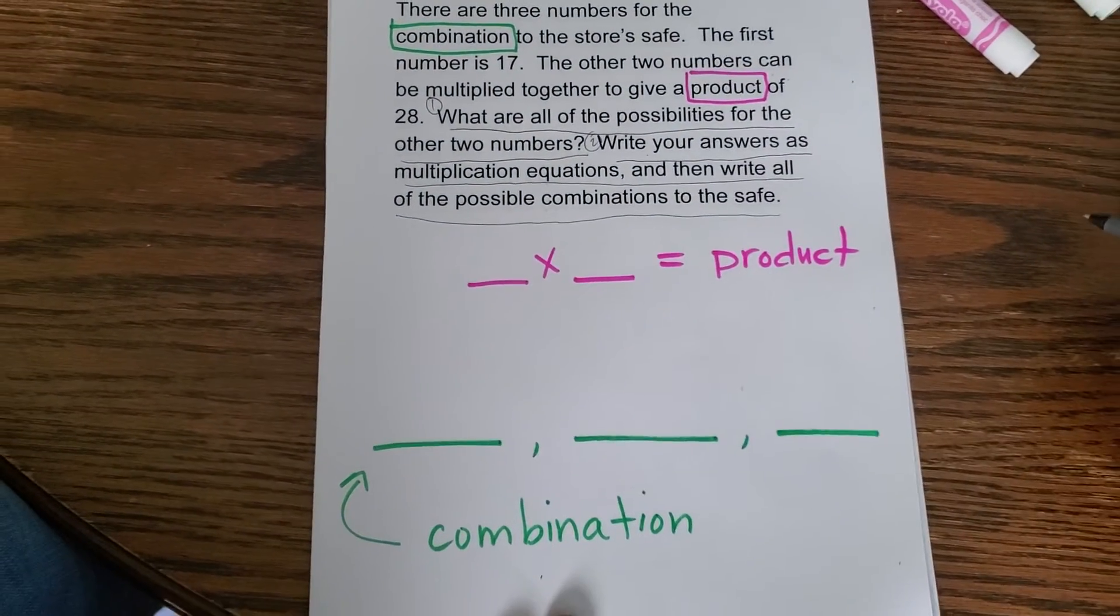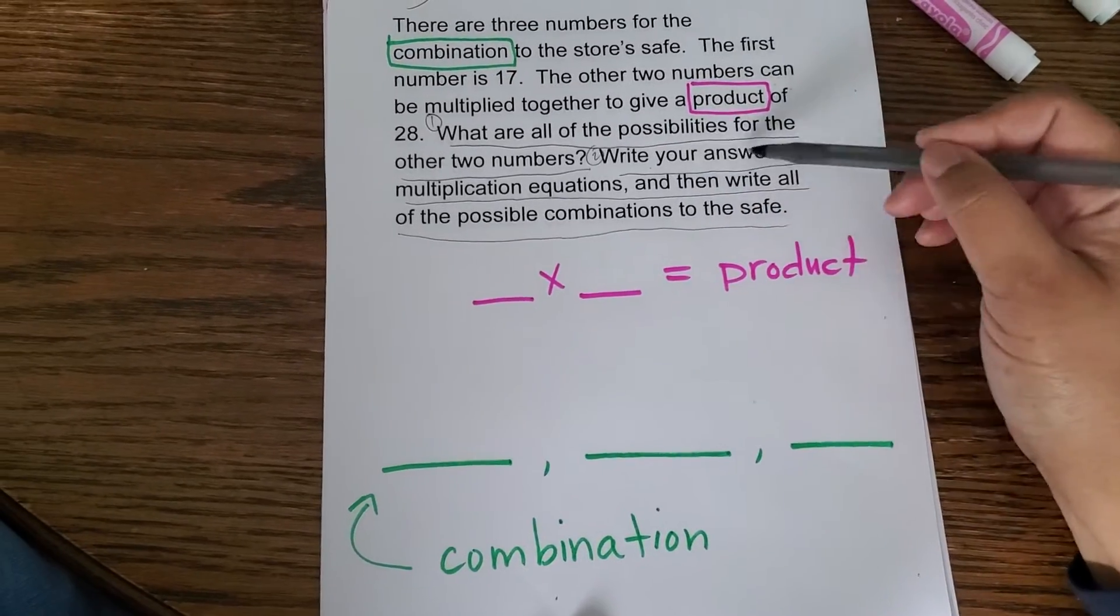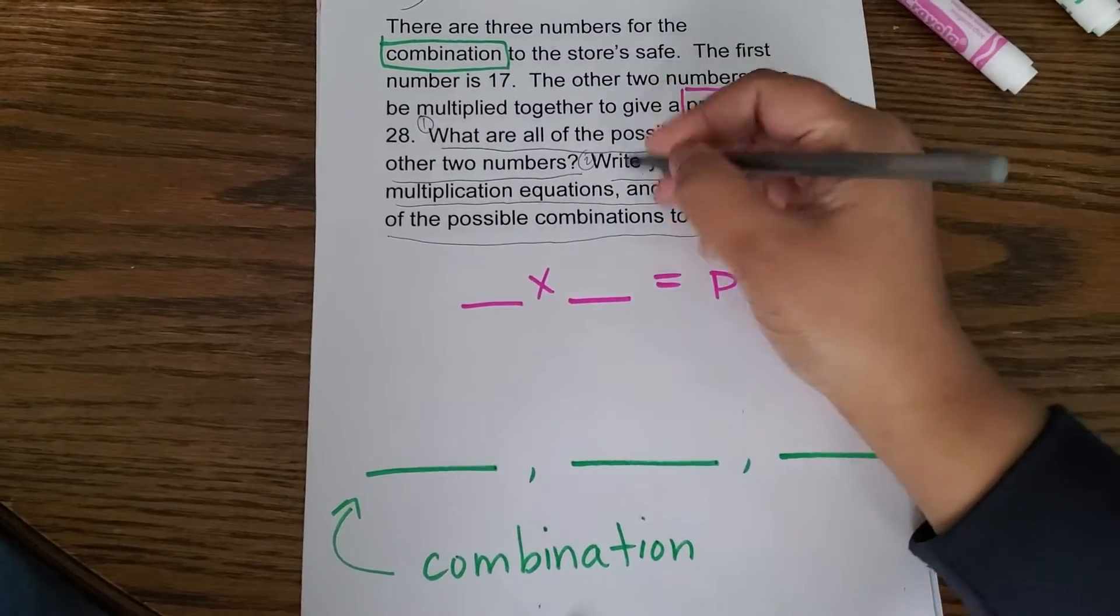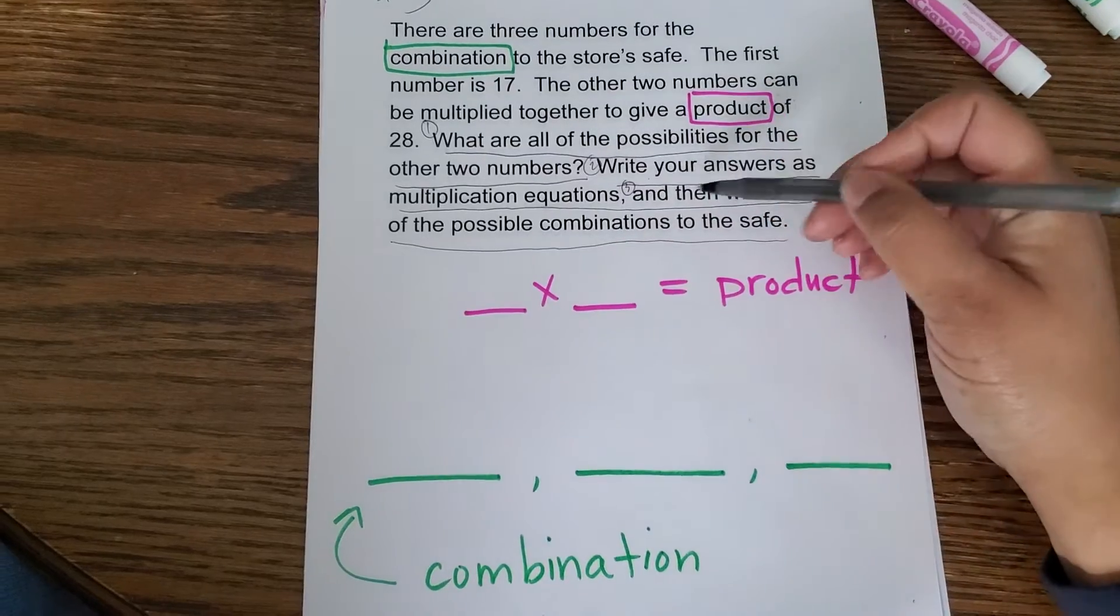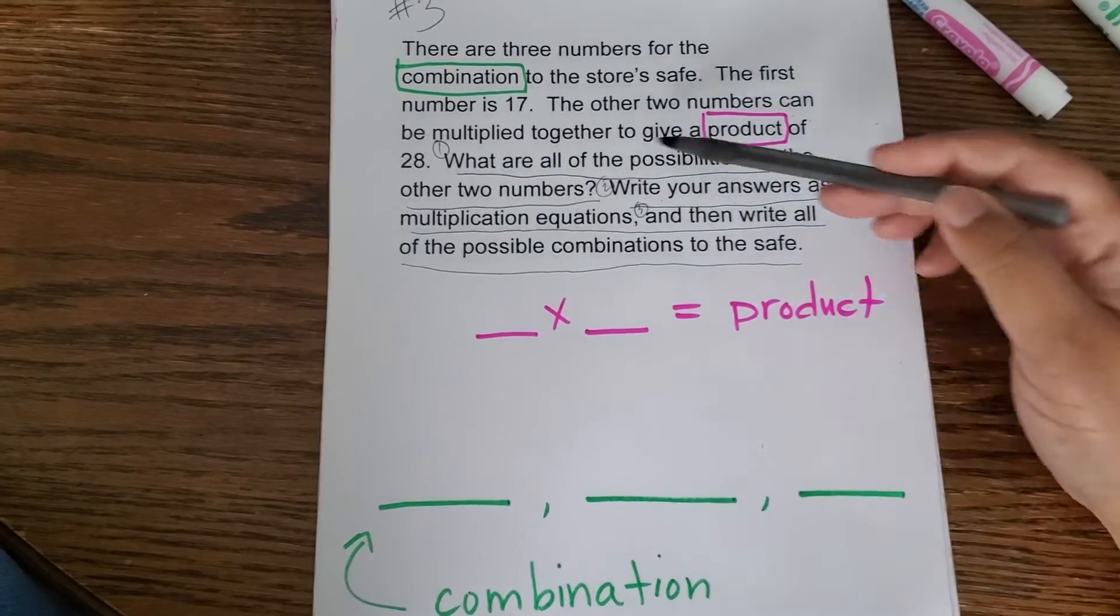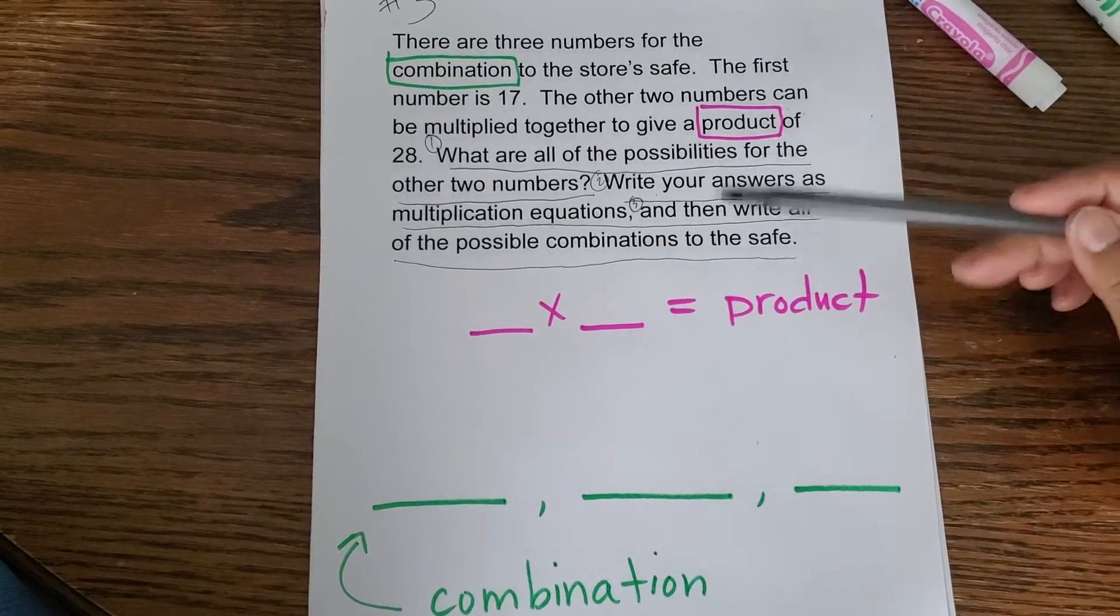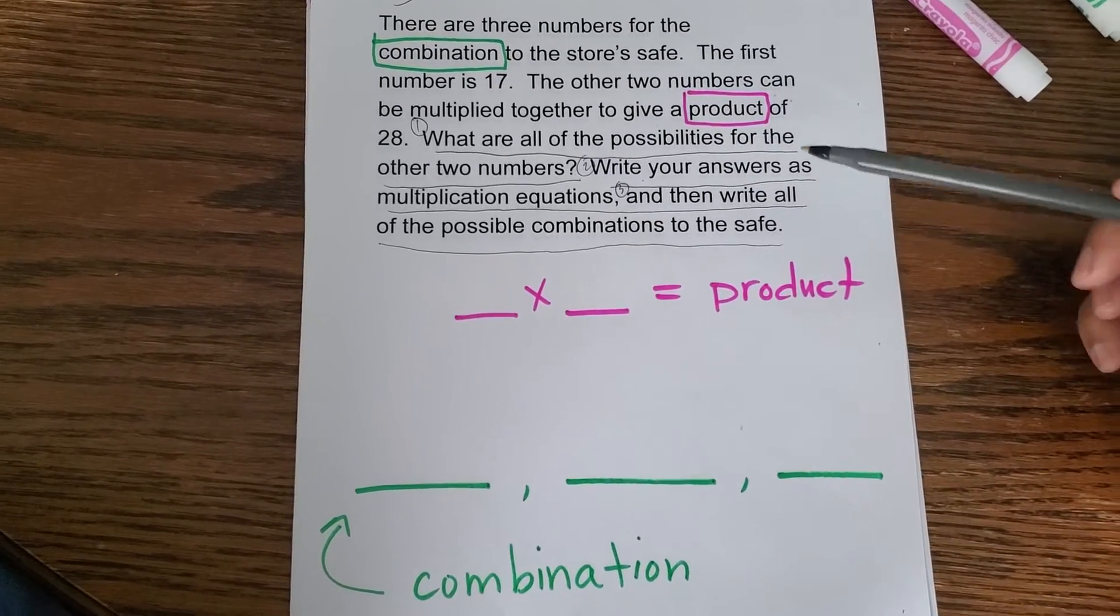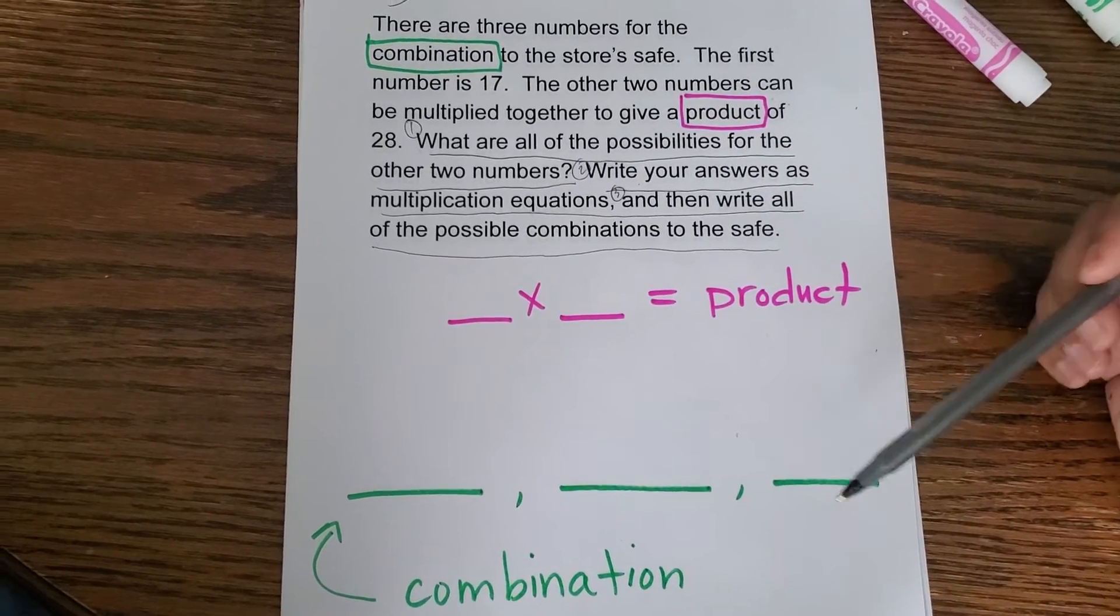It's kind of almost three parts really, because write your answers as multiplication equations is two, and then write all the possible combinations to the safe. So you have three separate parts of this question that you need to answer. Make sure you indicate all of that in your response.